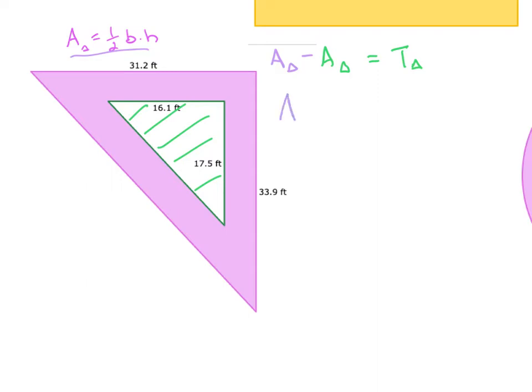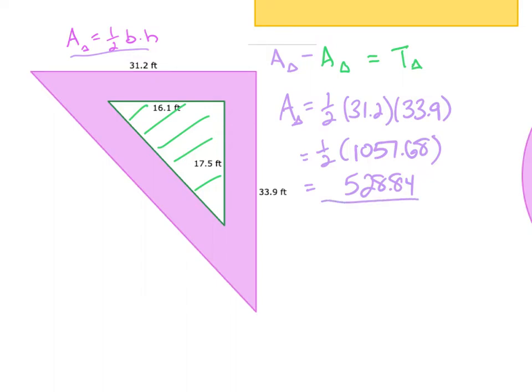So the area of the purple triangle is going to be 1 half. My base is 31.2 times my height of 33.9. When I multiply that out, I get that's 1057.68. Well half of 1057.68 is equal to 528.84. I'm just going to leave that where it is. So that's my big purple triangle.